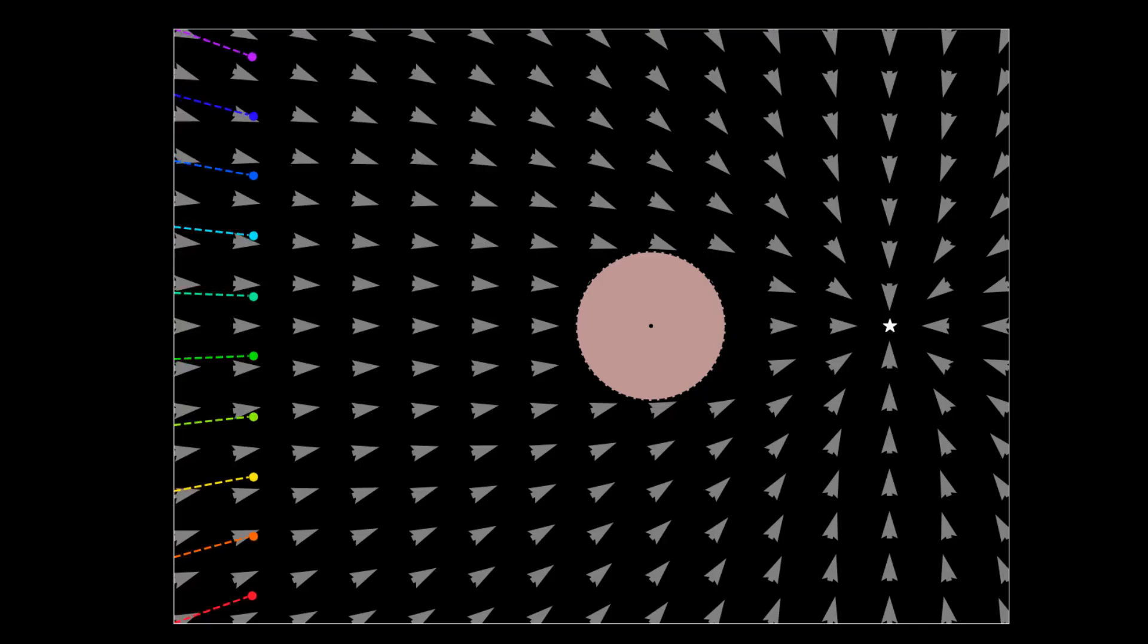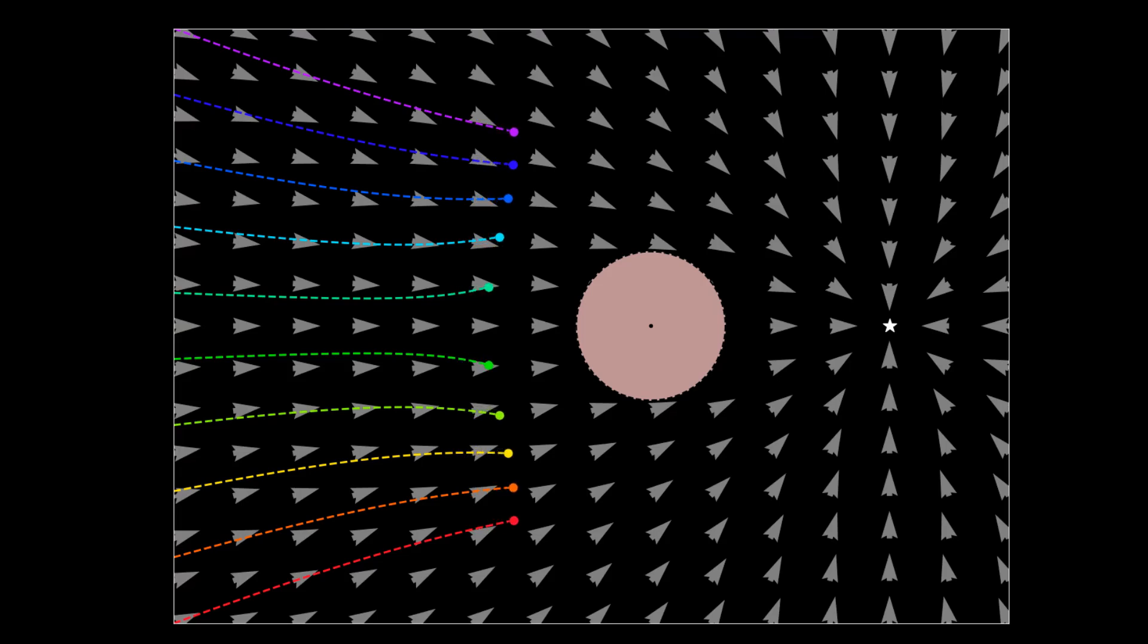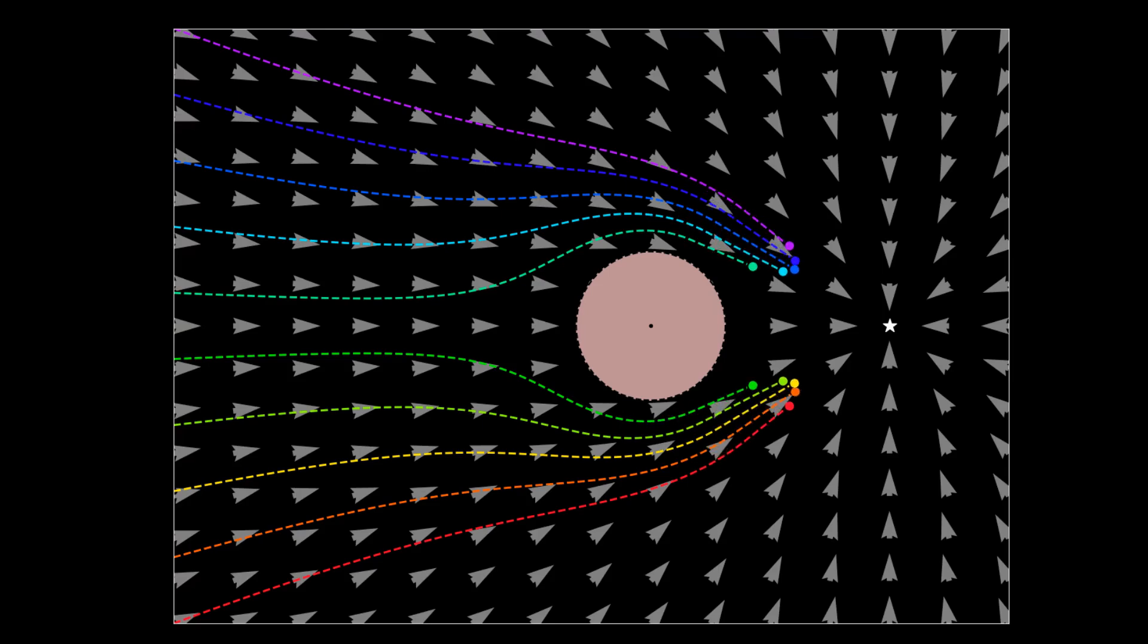This state-dependent transformation can be understood as a global vector field. When we utilize this vector field to guide an agent, we can generate collision-free trajectories that navigate around obstacles.